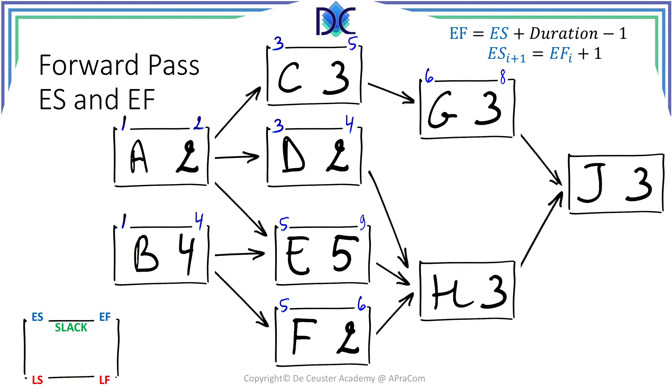For H we have now three predecessors. And now we have to look: D has an early finish on April the fourth, E has an early finish on April the ninth, and F has an early finish on April the sixth. And we see that activity E is determining the start of activity H. So H can start on April the tenth. 10 plus 3 minus 1, so H finishes on April the twelfth.